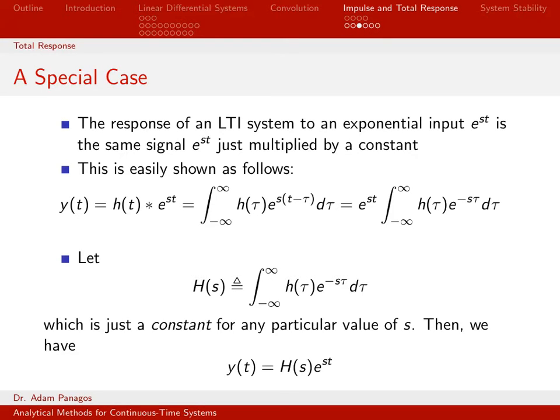If I know what s is, this right here just gives me a number. It evaluates to just some scalar quantity. It could be complex, but it's just a number. So when I'm all said and done, what happens is my output is just my input e to the st times this number h of s.